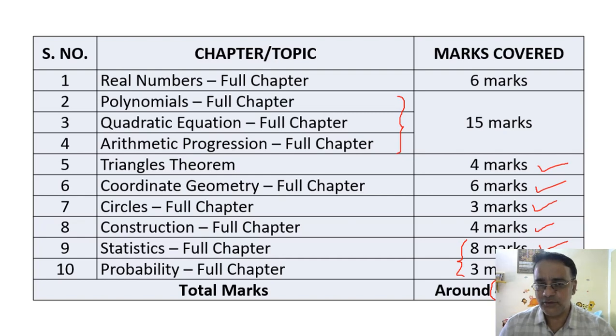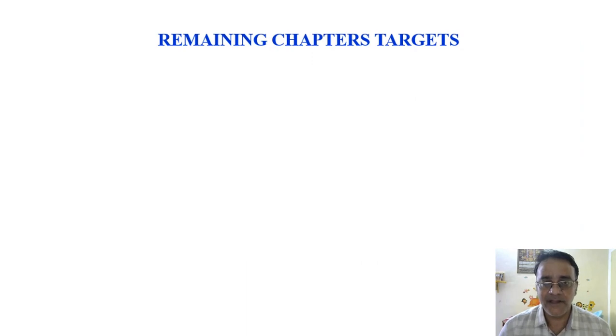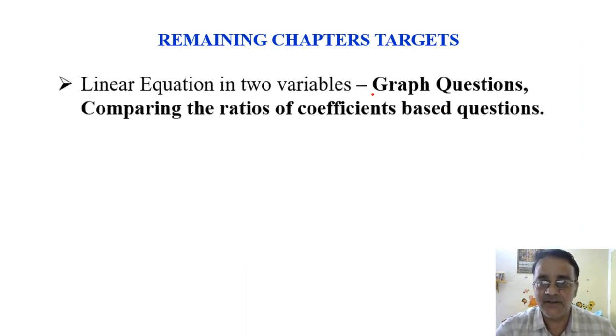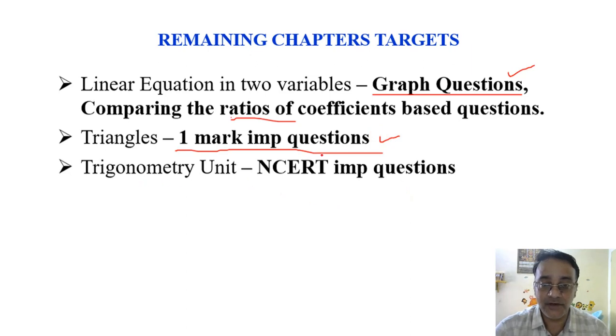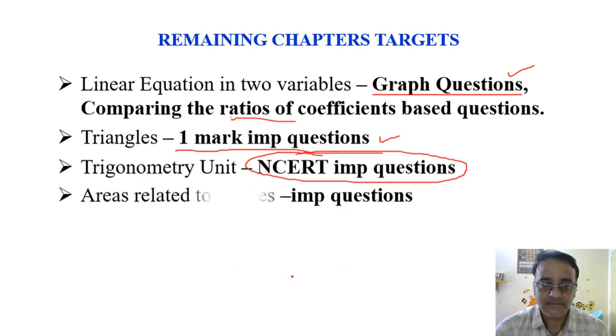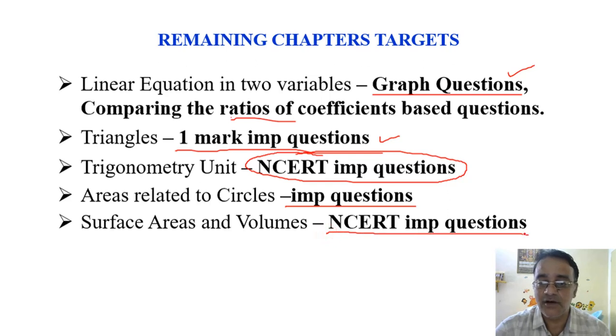Now after completing all these chapters, I would like to tell you that you can complete some important questions from the remaining chapters. So remaining chapters - Linear Equation in Two Variables mein graph related questions bahut easy hain and students can do very easily, and the questions based on comparing the ratios of coefficients. These two questions can be completed. And Triangles mein one mark questions, complete important questions. And Trigonometry Unit all NCERT important questions. And area related to Circles mein bhi kuch important questions complete. And Surface Areas and Volumes all important NCERT questions. All these questions I will publish in my minimum level study material. If you complete that much portion, I am 100 percent assured that you can score easily more than 60 marks out of 80.